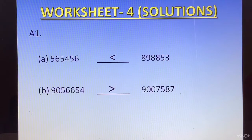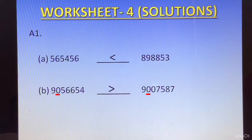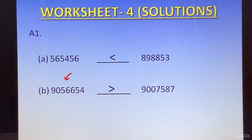The next one again had equal number of digits — 7 digits in both numbers. Here, the first digit 9 is the same in both numbers, and the second digit 0 is also the same. We look at the third digit of both numbers: 5 and 0. Since 5 is greater, the number 9056654 is greater.